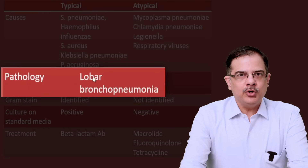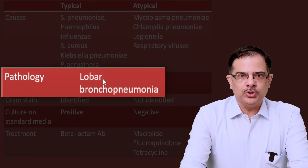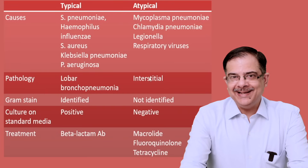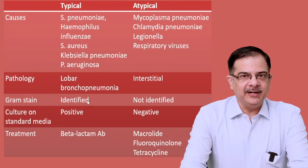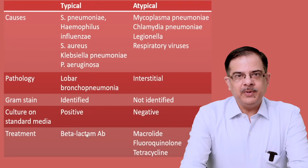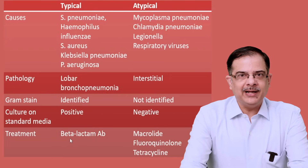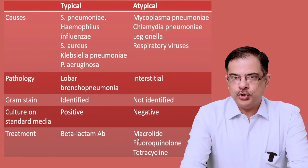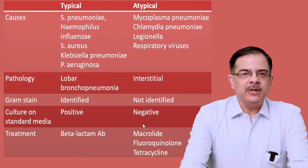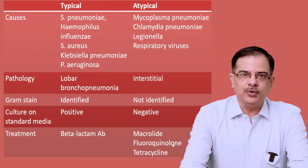The pathology is usually lobar pneumonia or bronchopneumonia. Lobar pneumonia is due to Streptococcus pneumoniae and bronchopneumonia is due to Gram-negative bacilli. In atypical pneumonia the pattern is interstitial inflammation. Gram stain is identifiable in typical cases as Gram-positive or negative, while it is not identified in atypical cases. Culture on standard media is positive in typical cases but negative in atypical cases. Treatment of typical pneumonias includes beta-lactam antibiotics, while atypical pneumonias are treated with macrolides, fluoroquinolones, or tetracyclines, or antivirals for some respiratory viruses. Beta-lactam antibiotics are not effective for atypical pneumonias.